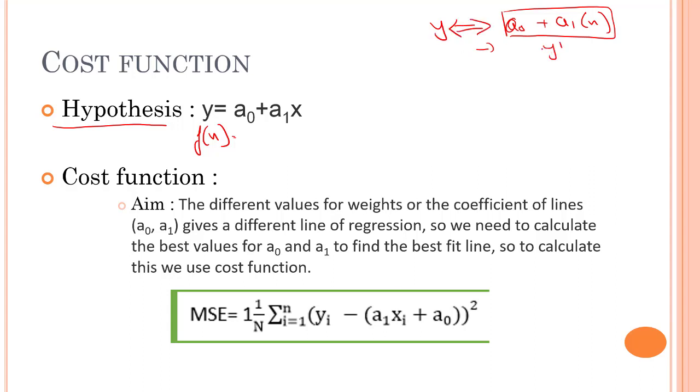So whatever we have over here is y dash and y dash should be equal to y. Y dash is the predicted value and this is the real value. They should be quite nearby.